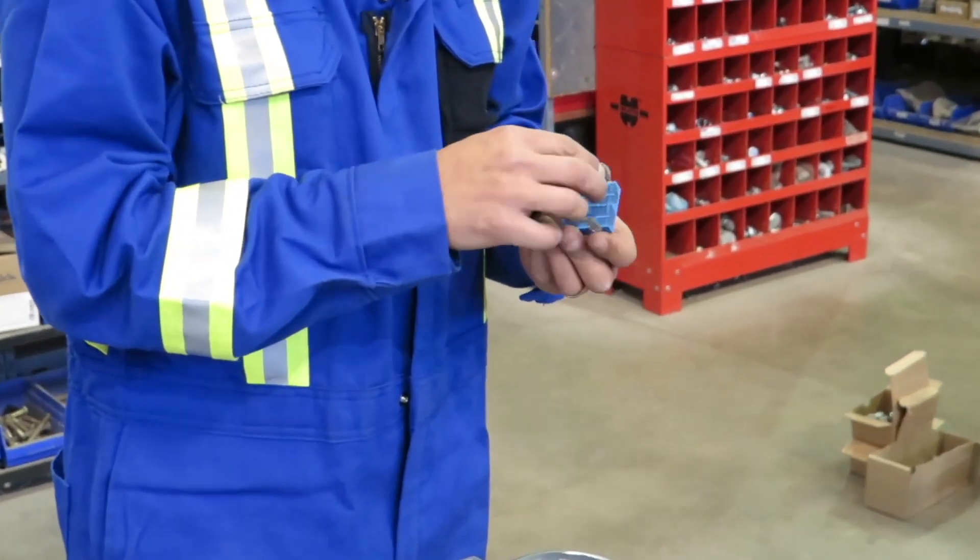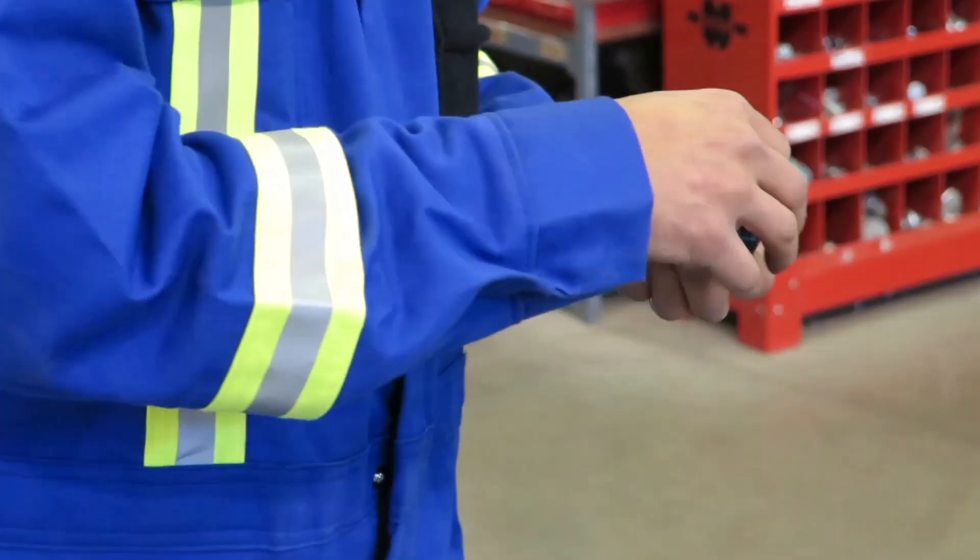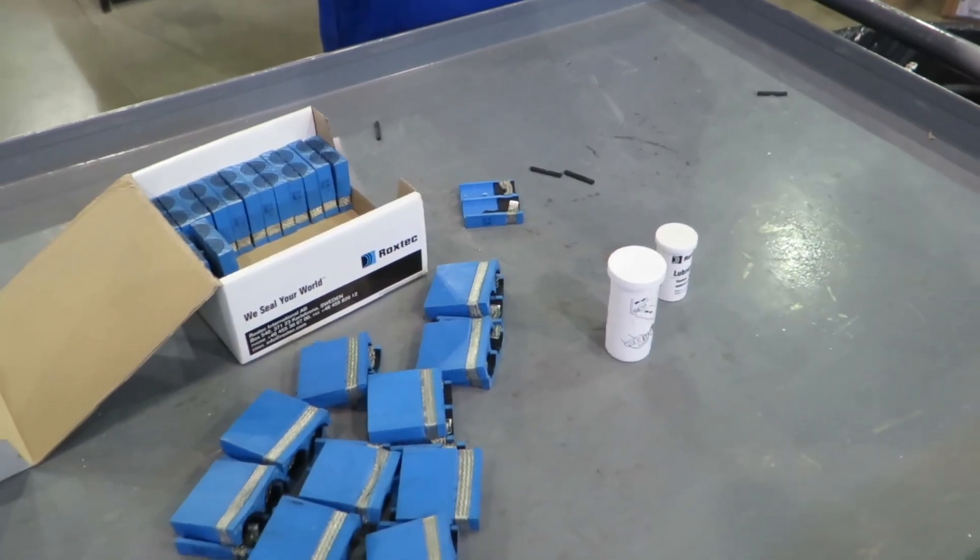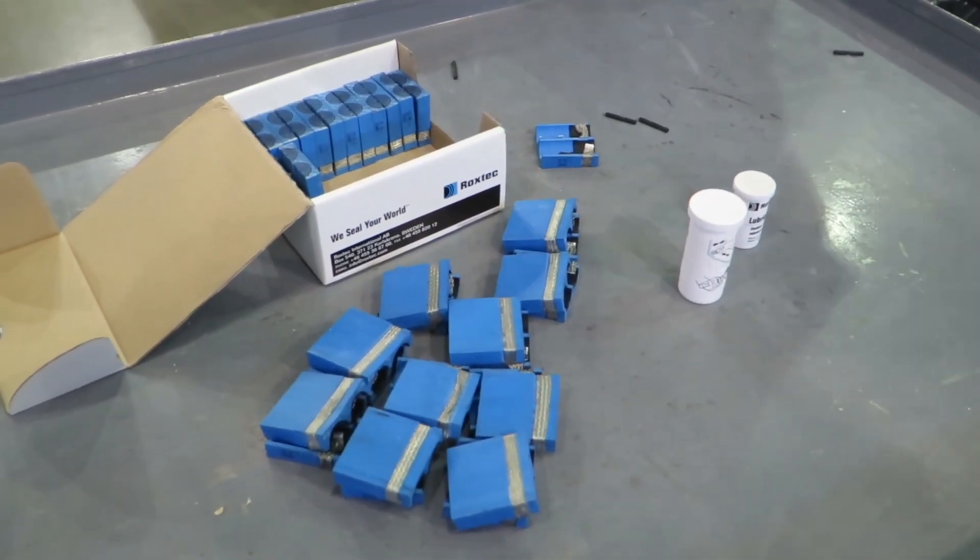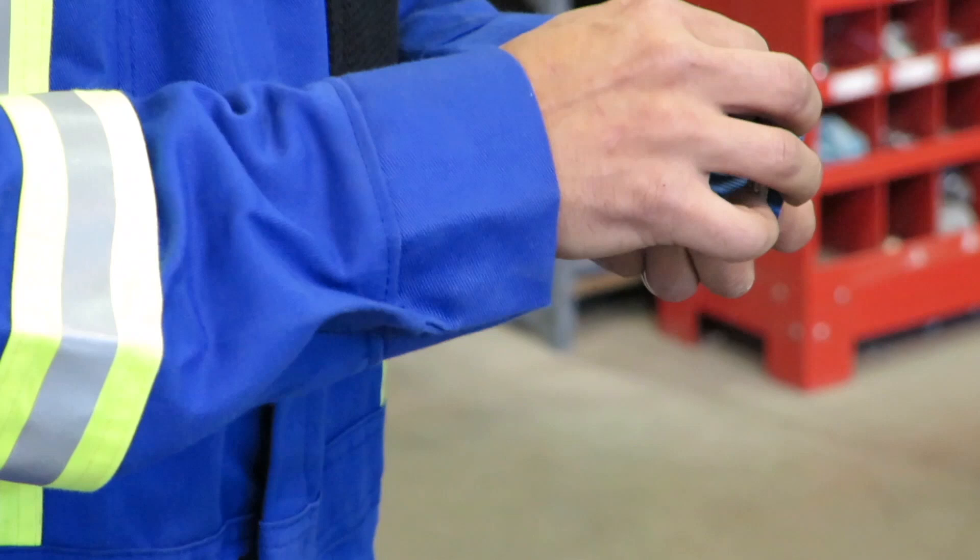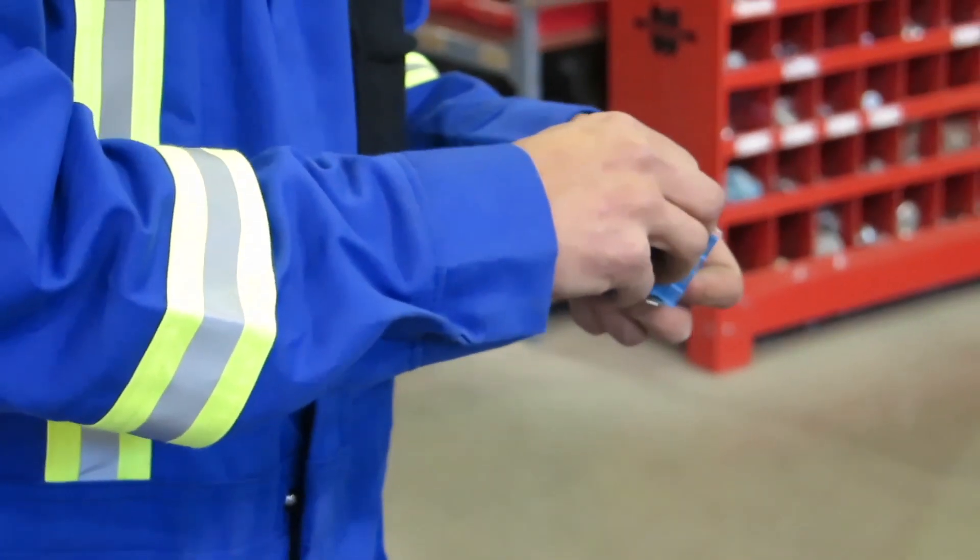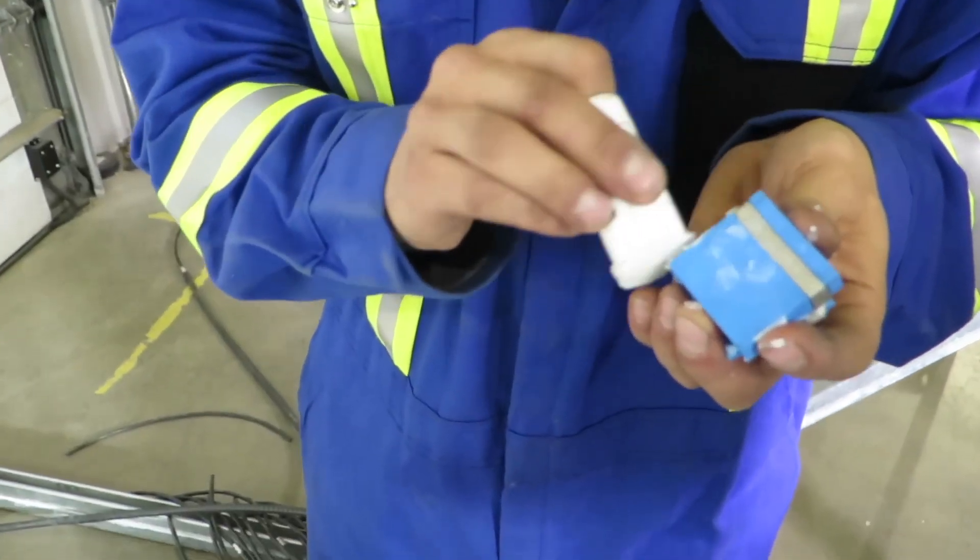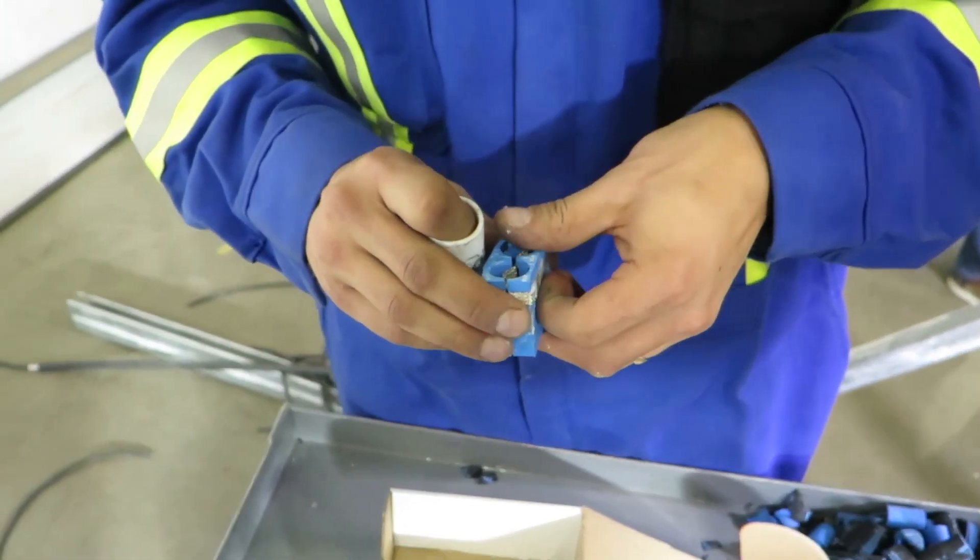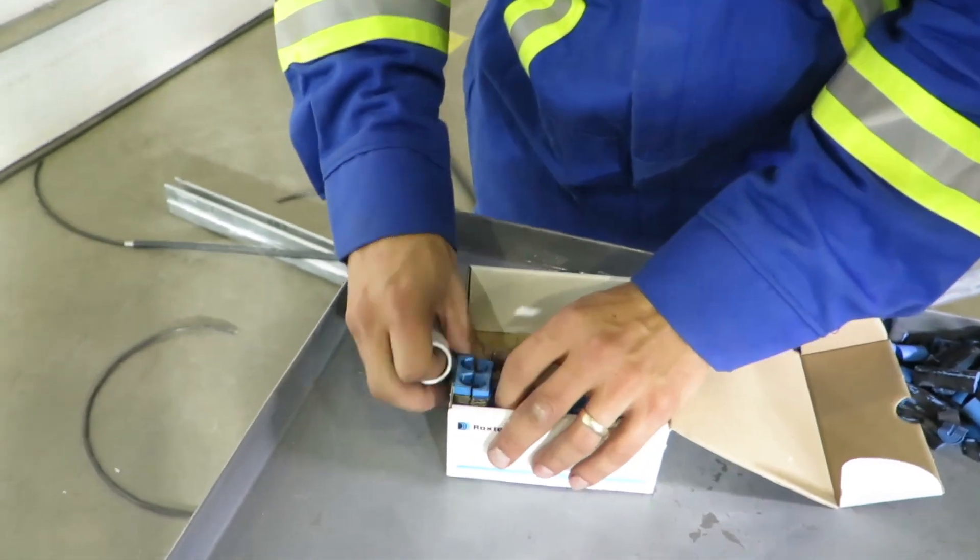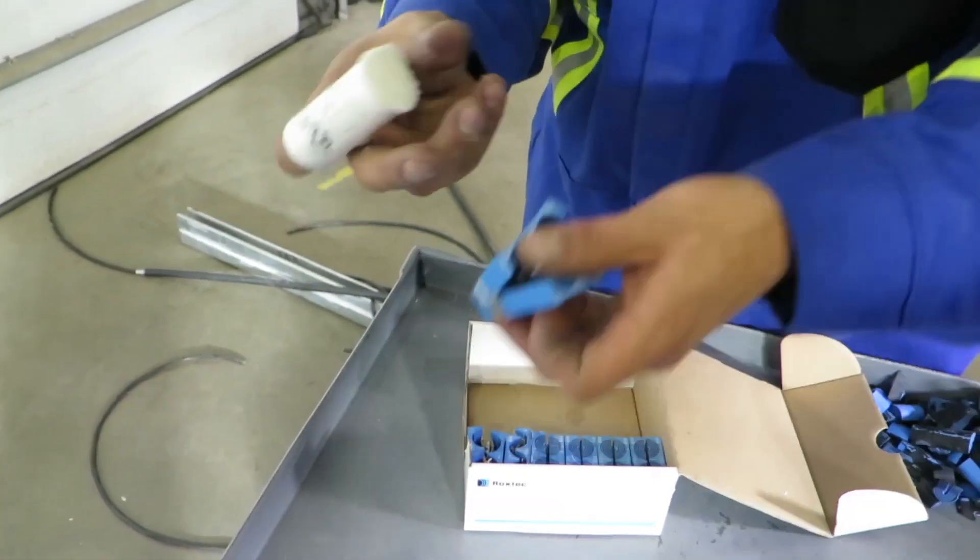Matt peels off layers from the sealing modules to adapt them to the correct cable sizes. He prepares all modules directly so as to be able to route all cables at the same time. This can be done with Roxtec. It's possible to adjust modules later on, while connectors must be fixed right away.